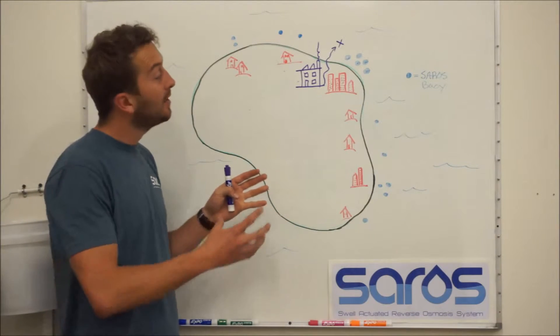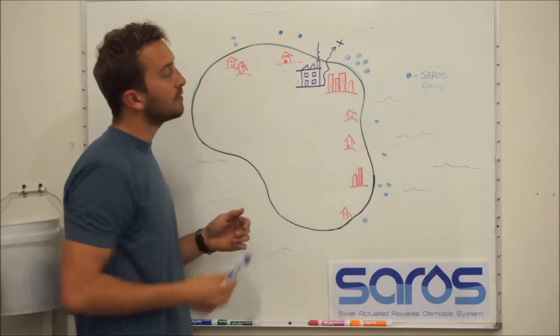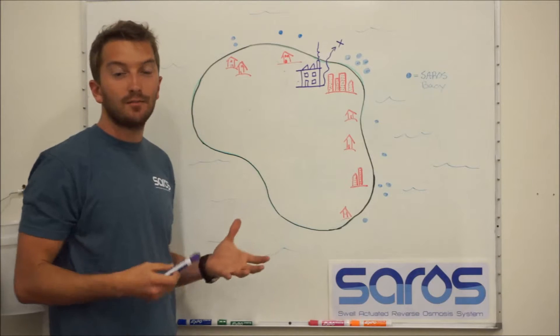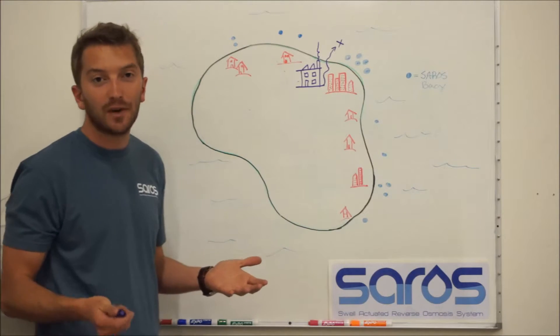These big centralized desal plants emit a really salty brine concentrate that gets dumped into the ocean in one spot. This brine creates a high concentration localized dead zone where the salinity is so high that sea life sometimes can't survive.